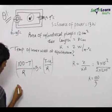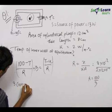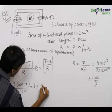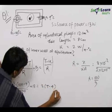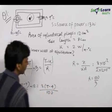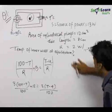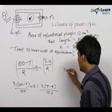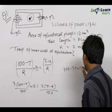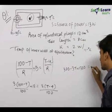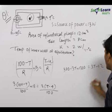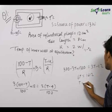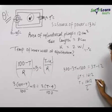Substituting R = 100/3 into the equation, we get: 3 × (100 − T) / 100 + 13 = 3 × (T − 4) / 100. Solving this: 300 − 3T + 1300 = 3T − 12. So 6T = 1612, therefore T = 1612/6.